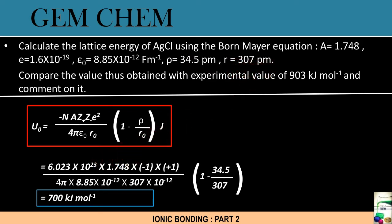We substitute all the values. See here, this R value is given in picometer, so we just convert the picometer into meter by multiplying it by 10⁻¹². For this case, there is no need of conversion as rho value is also in picometer and R is also in picometer. On substitution, we get the value near about 700 kJ per mole. So we observe here huge deviation.